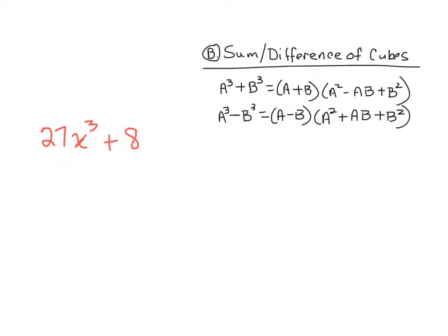27x cubed plus 8. So let's say it's about a week and a half, two weeks from now. You're on your test. The directions say factor. And this problem pops up. So here's the way that we want to think through this. We want to say first, is there a common factor? That's always what we say first. Class, do you have a common factor between 27 and 8? No, we don't. That's right.